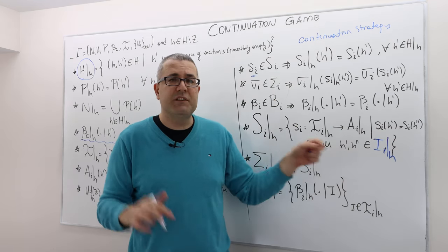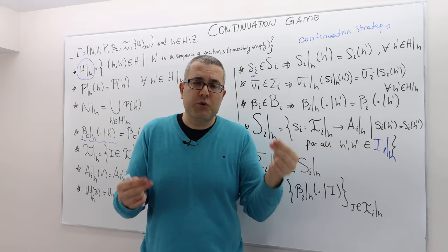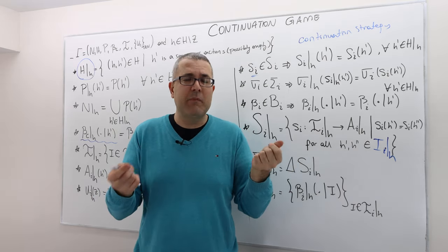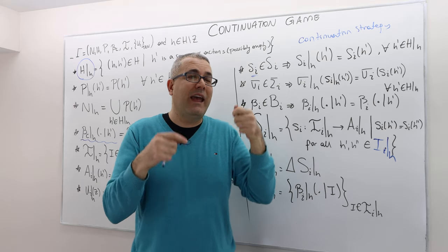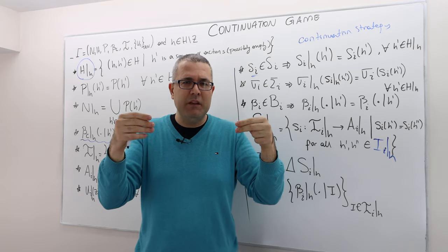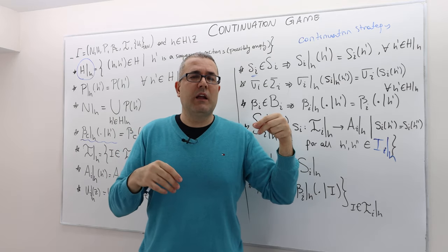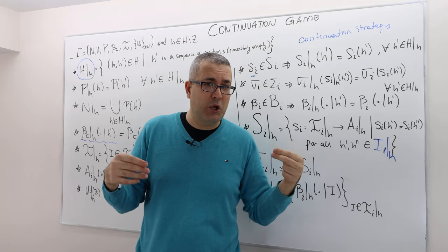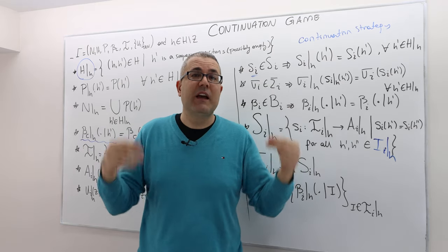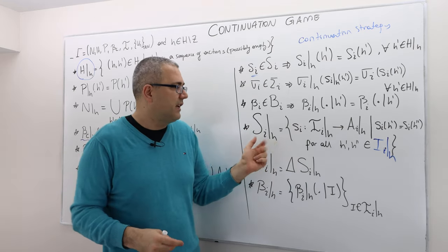For any two histories that are in the same constrained information set, the pure strategy must assign exactly the same action. In the same information set, you cannot choose different actions in different decision nodes — meaning after different histories in the same information set, you cannot choose different actions.